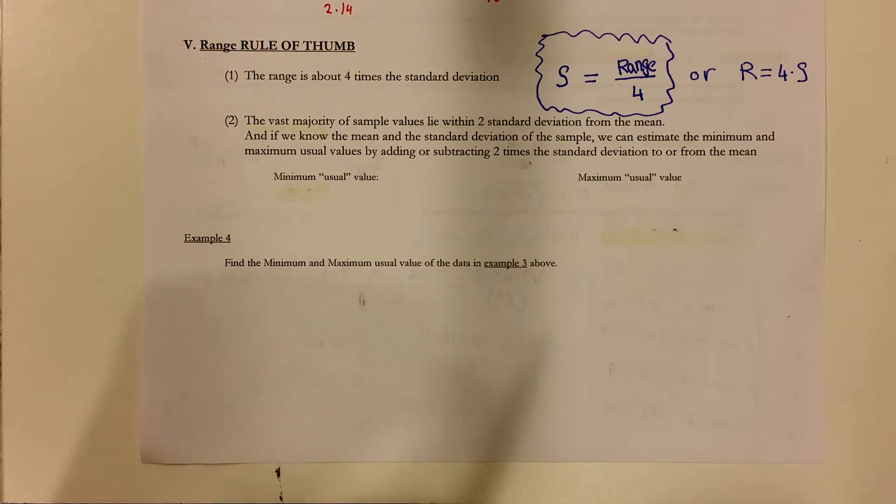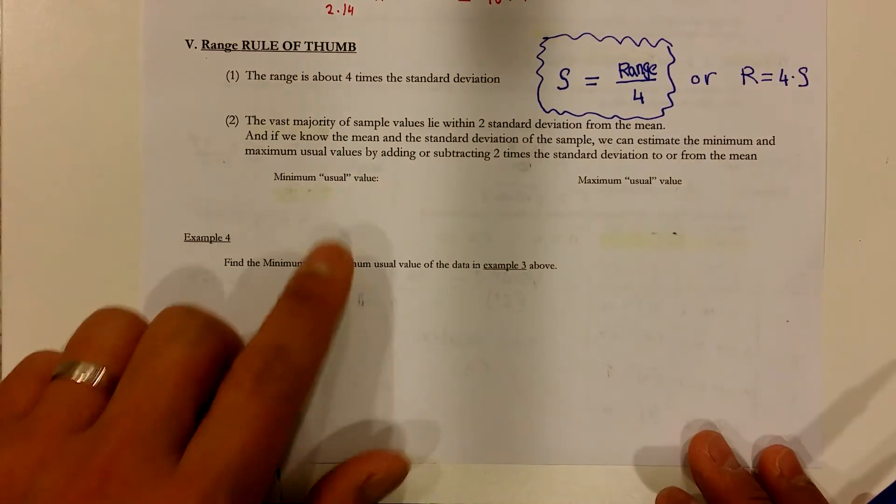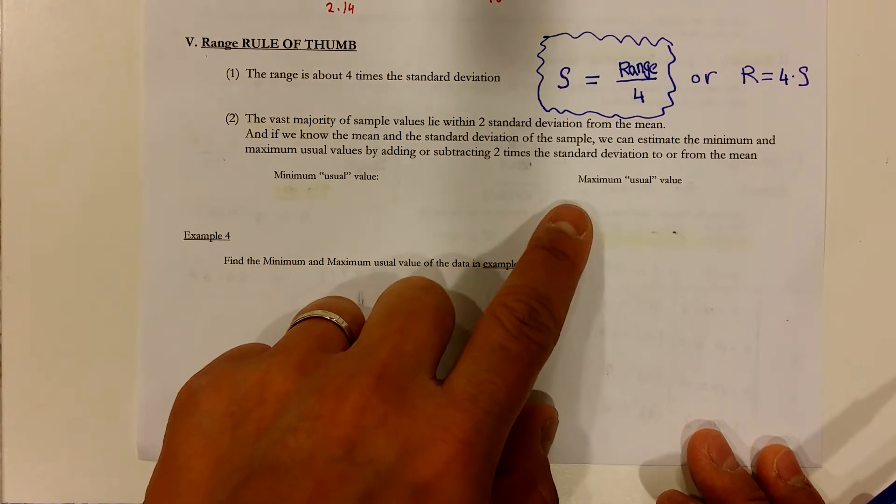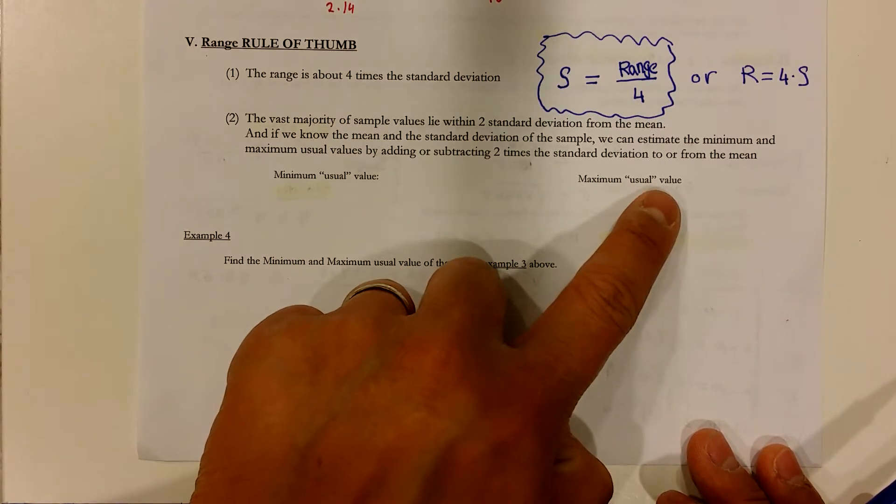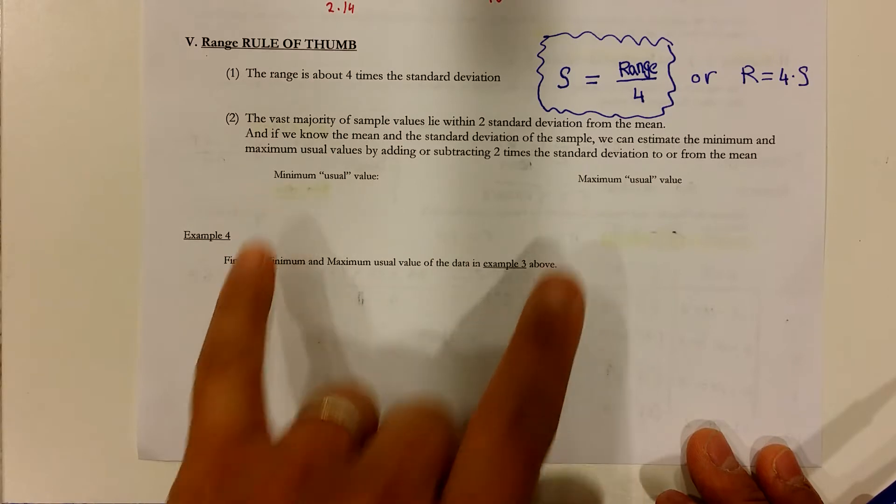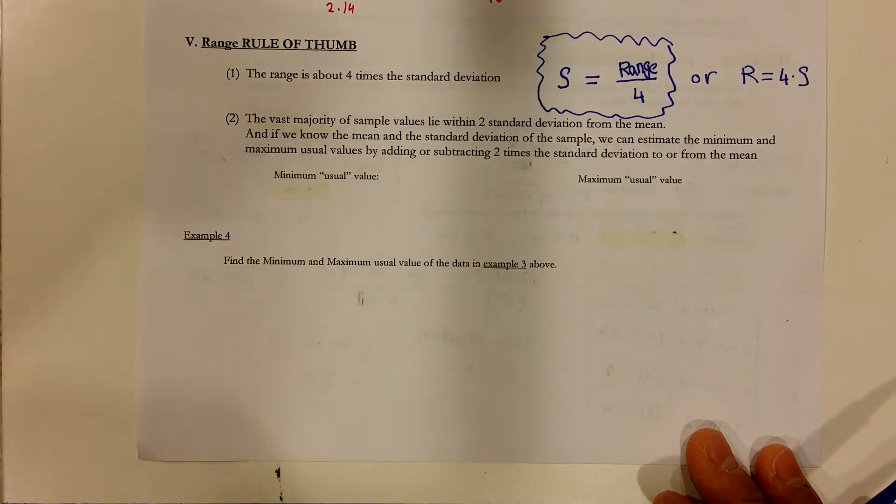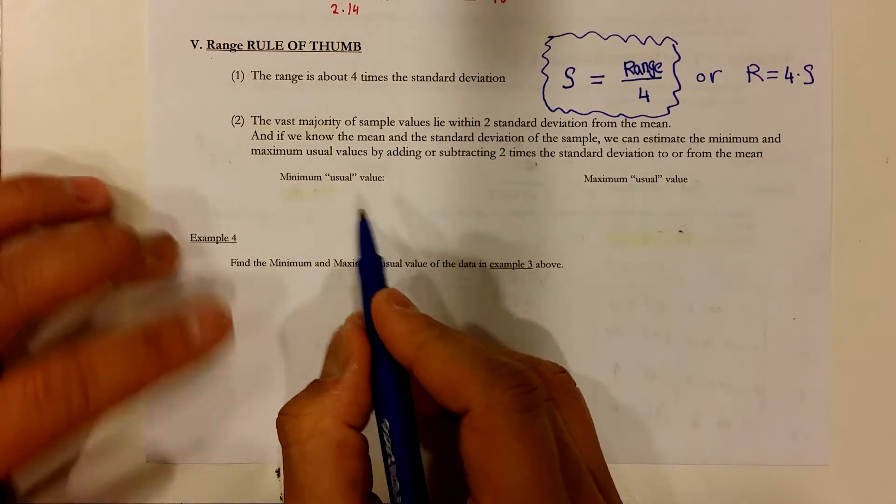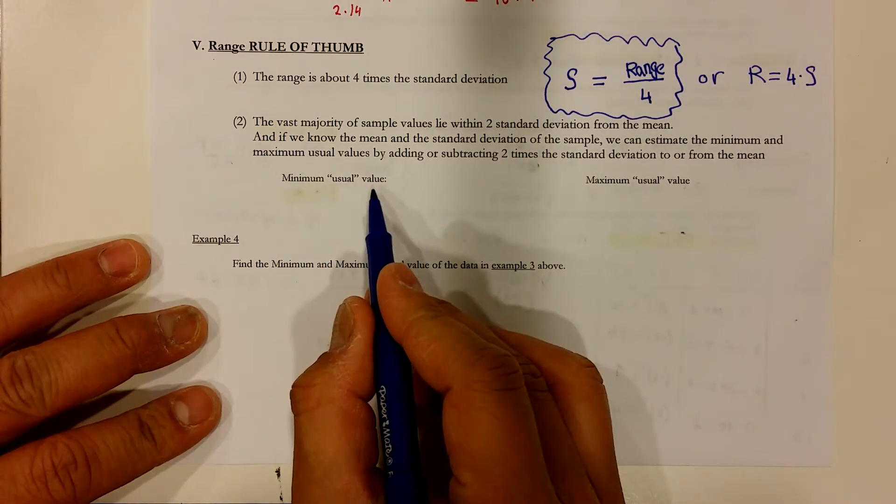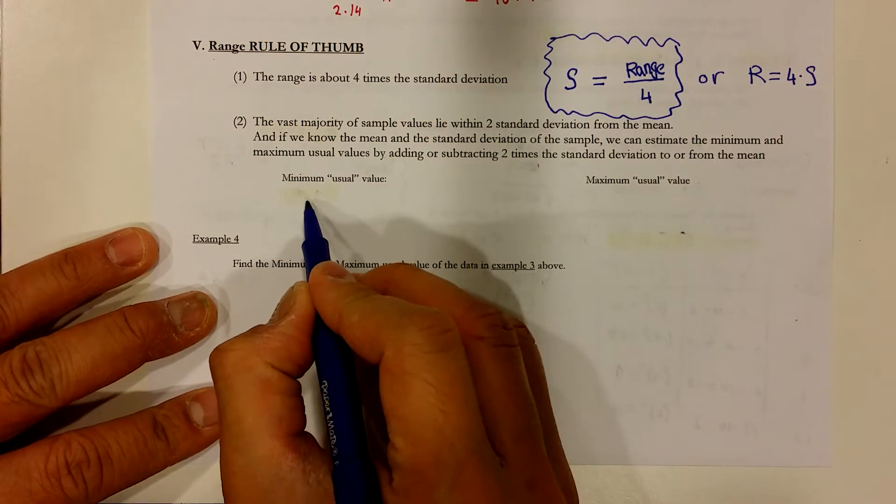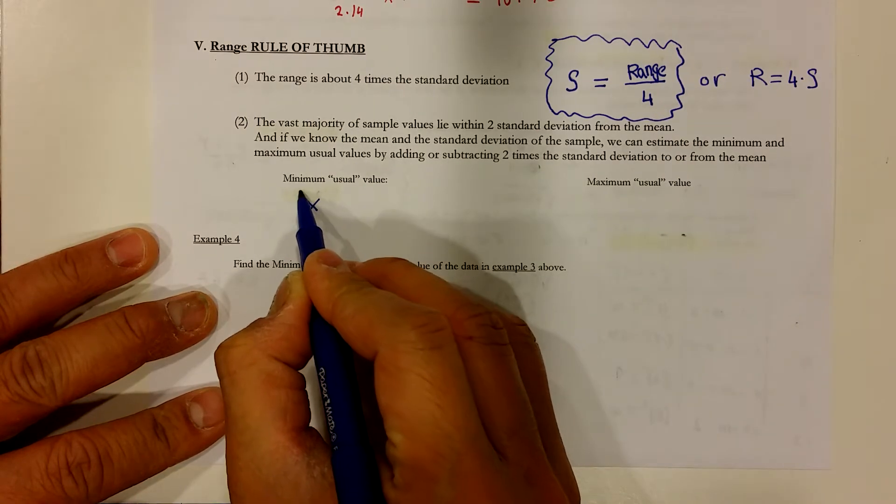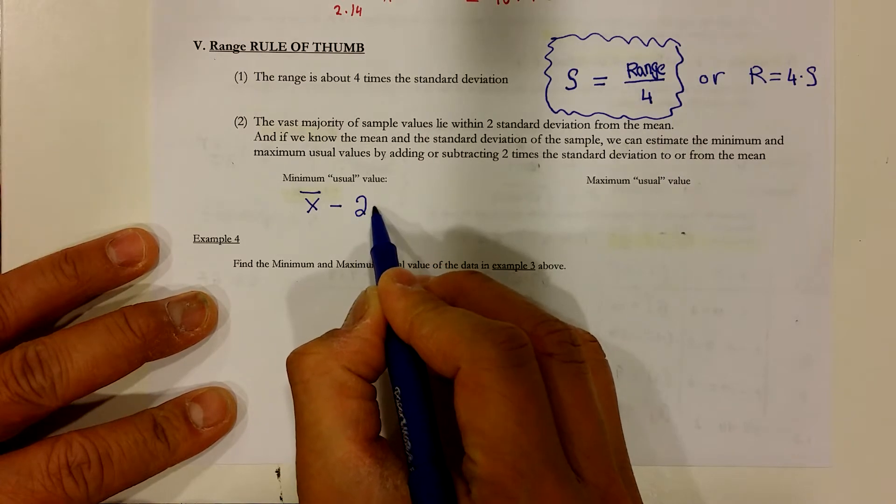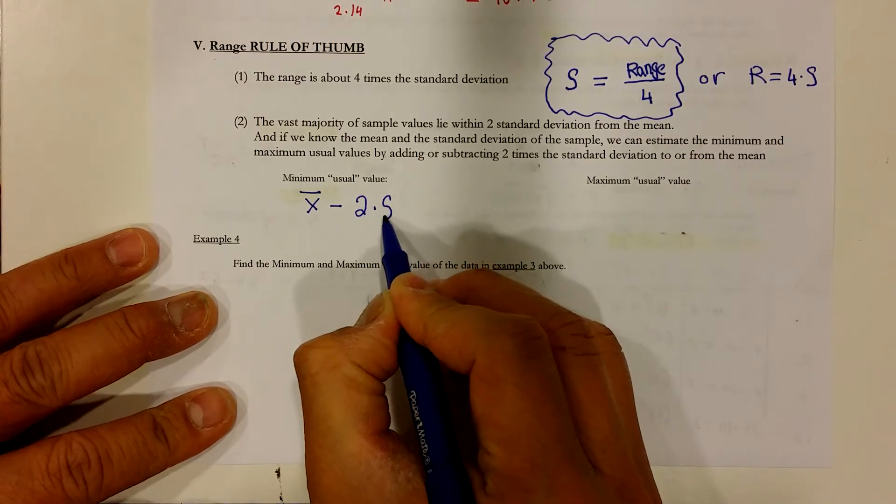So, for now, I would like to define how to find the smallest acceptable number and the largest acceptable number and then we'll apply this to a specific problem so that you can deepen your understanding. The rule of thumb says that the smallest acceptable number can be found by taking the value of the average and then subtract that to 2 times the standard deviation.